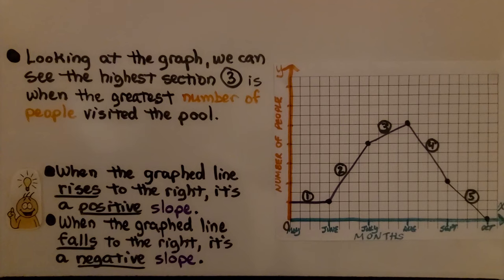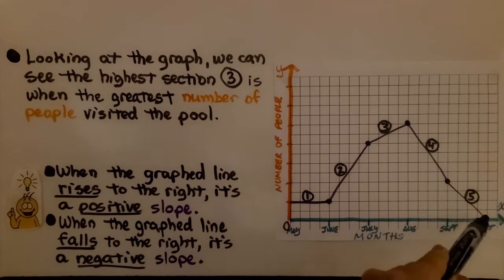When the graphed line rises to the right, it's a positive slope, and when it falls to the right, it's a negative slope. So we can see the number of people are decreasing.